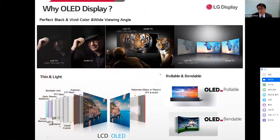Let's begin with why we have chosen OLED for graphene application. Comparing LCD with OLED, OLED display has an enhanced ability in displaying perfect black images, vivid colors, and wide viewing angles. OLED displays are also thin, light, and bright because they don't need to use a backlight at all.